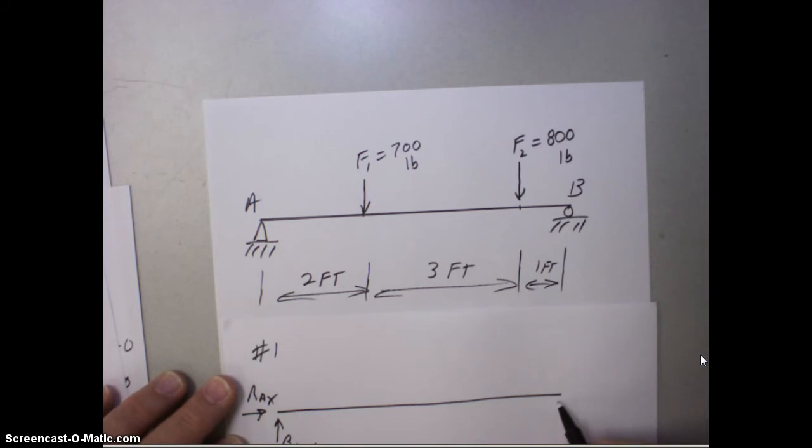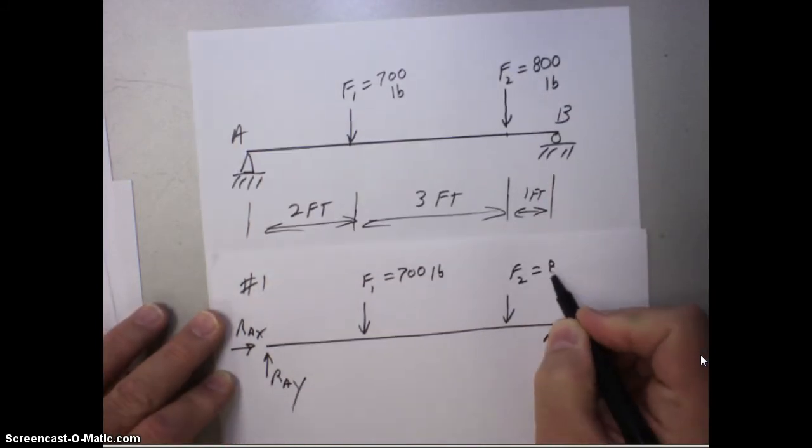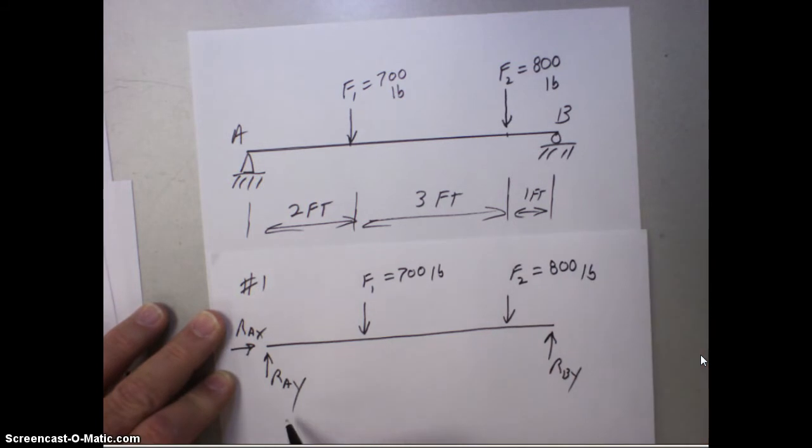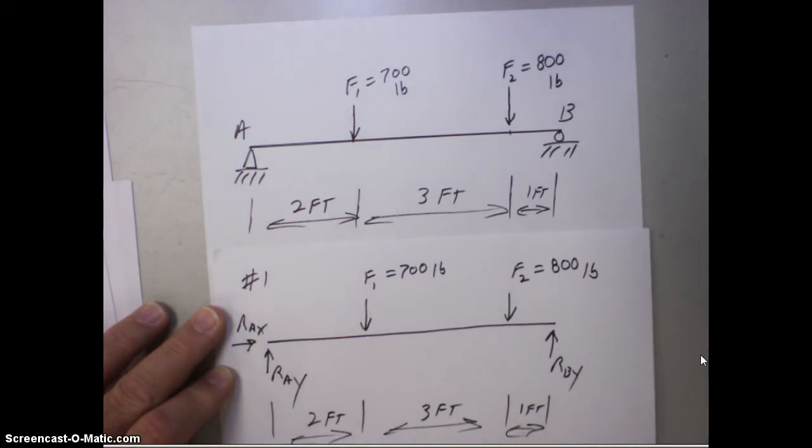And here at the roller I'm replacing it with a force RBY. The two applied forces: F1 equals 700 pounds and F2 equals 800 pounds. Make sure we get our distances here. This is two feet, this is three feet, and this is one foot.